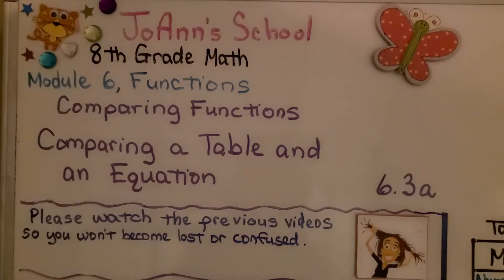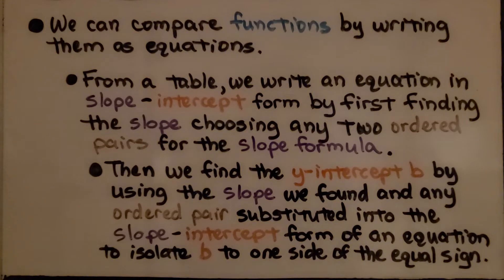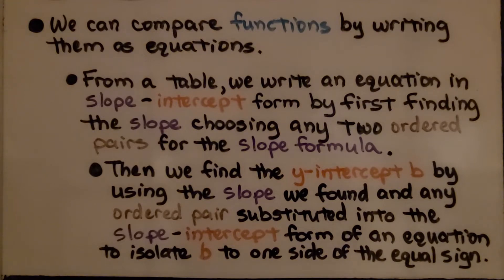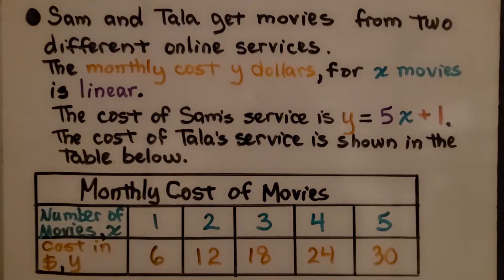Comparing a table and an equation, we're going to be comparing functions in this lesson 6.3a. We can compare functions by writing them as equations. From a table, we write an equation in slope-intercept form by first finding the slope, choosing any two ordered pairs for the slope formula. Then we find the y-intercept b by using the slope we found and any ordered pair substituted into slope-intercept form to isolate b. Now that may have sounded confusing, so let's walk through it.